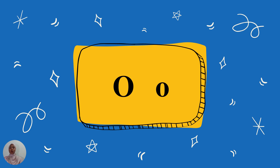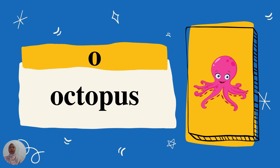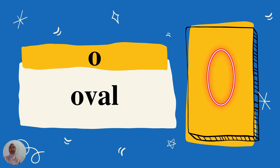This is O. O capital letter and O for small letter. O for octopus. O for owl. O for oval.